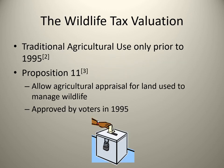Prior to 1995, the primary valuation for open space land was traditional agricultural use. After Proposition 11 was approved in 1995, it allowed properties with agricultural appraisals to manage for wildlife and maintain their 1D1 open space valuation.